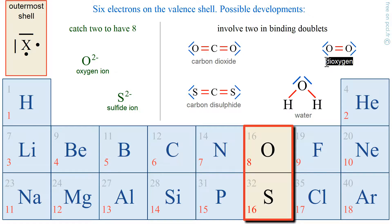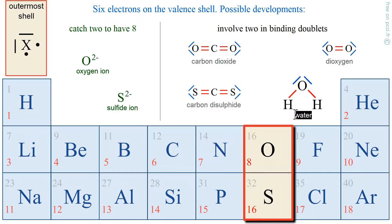Regarding oxygen — check that the octet rule is verified and that oxygen here has 8 electrons. There is the water molecule, which you know. Also carbon dioxide, and carbon disulfide, which is the same.